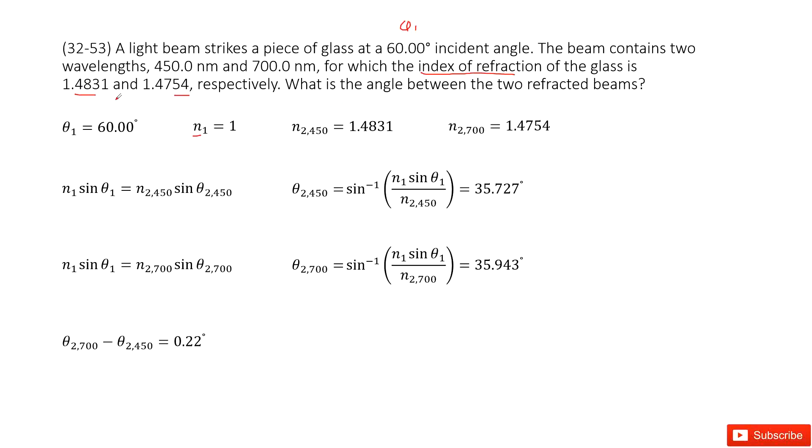So now we can write down the index n2 for the first case, 450 nanometer, and similarly we can write n2 for 700 nanometer as 1.4754.